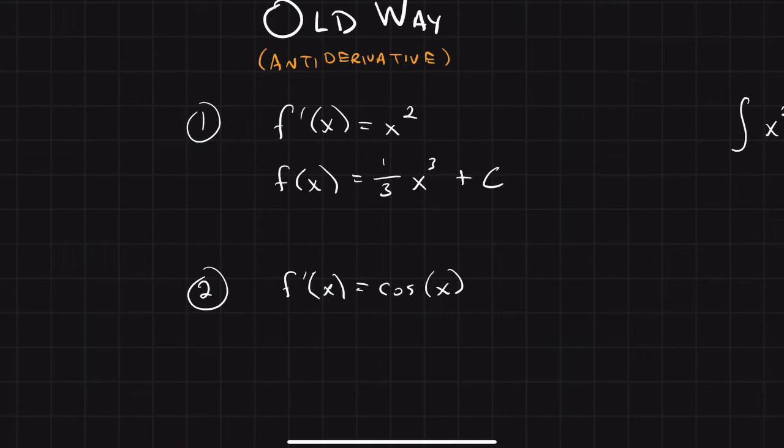Here's another one. The old way of doing this, you'd be given f prime of x is equal to cosine of x. Well, the derivative of sine is cosine. That means the antiderivative of cosine is sine. So f of x would equal sine of x, and then you have to add the constant term at the end, plus c.